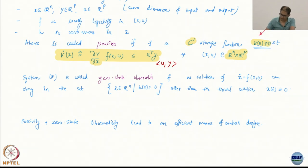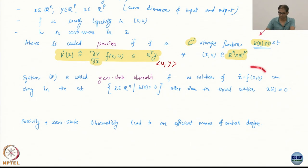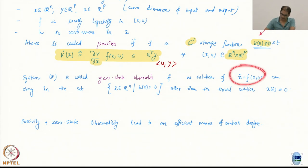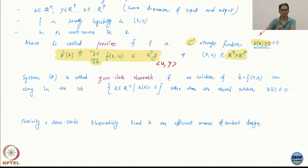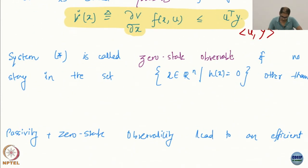What is it a solution of? It's a solution of this system — the uncontrolled dynamics. Whenever you put the control to zero, you're looking at the uncontrolled dynamics. No solution of this uncontrolled dynamics is in this set except the equilibrium zero solution. The equilibrium itself is a solution — it is a trajectory.